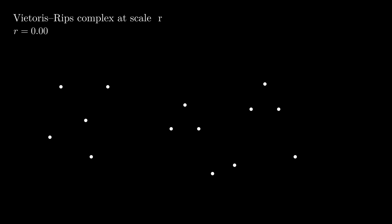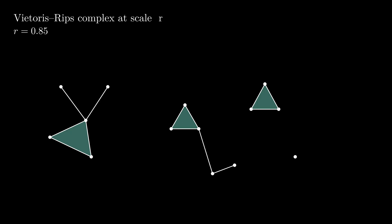That's where the Vietoris-Rips complex comes in. It's an approximation that's much easier to compute. Instead of checking whether all the balls overlap, we just check pairwise distances. If every pair of points in a set is within two times r, then we connect them into a simplex. There's even a neat relationship between the two, which shows that the Vietoris-Rips complex is always sandwiched between two Čech complexes.